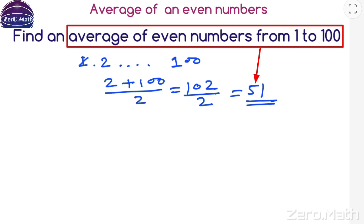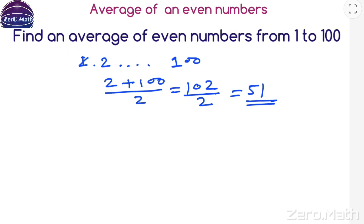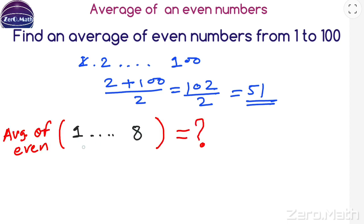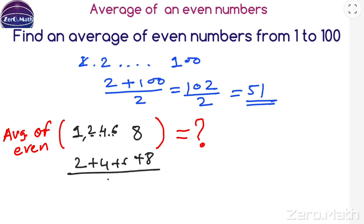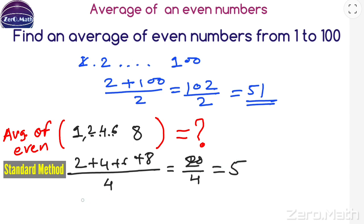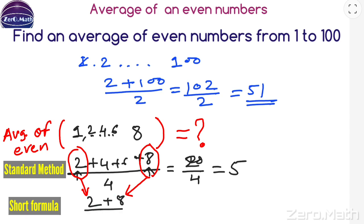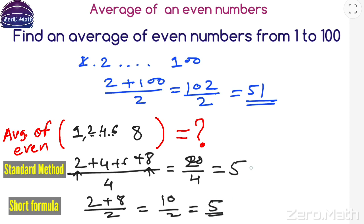To prove the formula works, let us find the average of even numbers from 1 to 8. The first even number is 2, then 4, 6, and 8. Standard method: (2 + 4 + 6 + 8) / 4 = 20 / 4 = 5. Now applying the formula: first even number is 2, last even number is 8. (2 + 8) / 2 = 10 / 2 = 5. Same result either way.